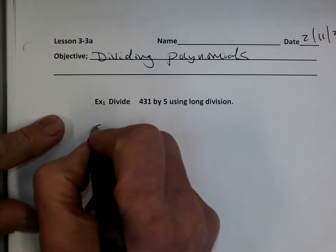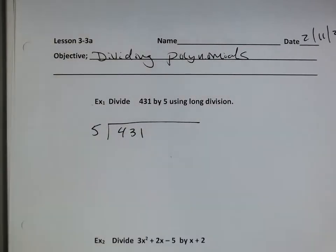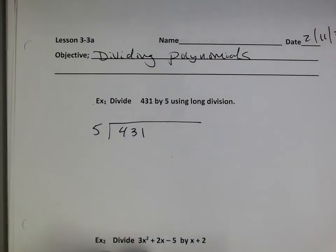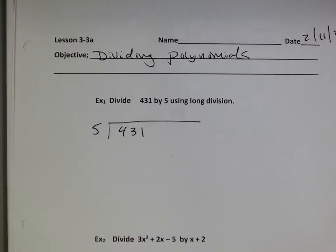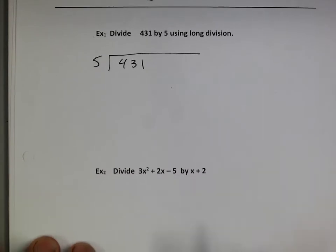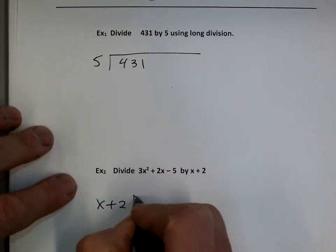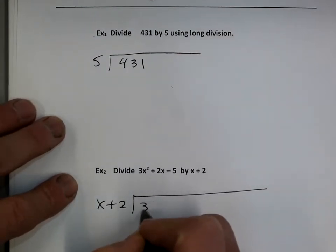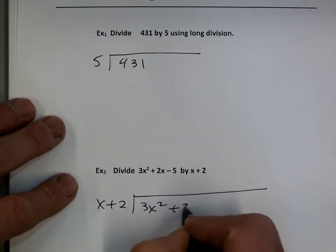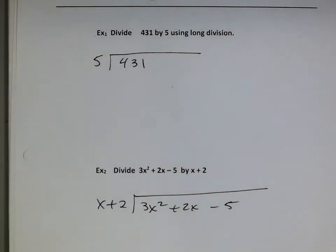So I'm going to go 5 goes into 431. And I'm going to take example 2 and try to mirror these two — do them together. So I'm going to take x plus 2 into 3x squared plus 2x minus 5. I want to do these two problems together because the steps are exactly the same.